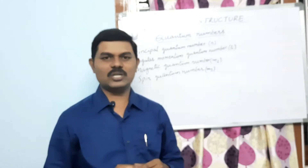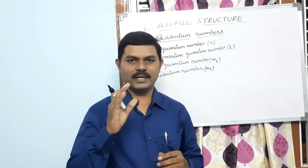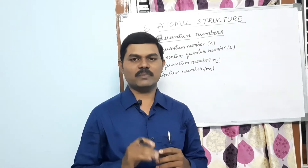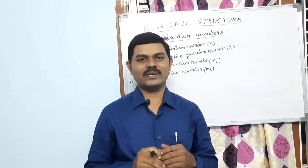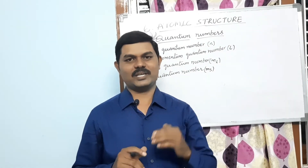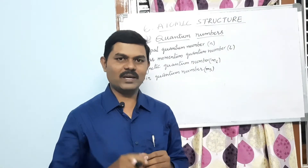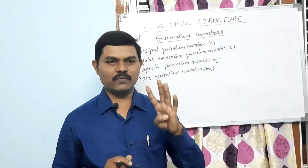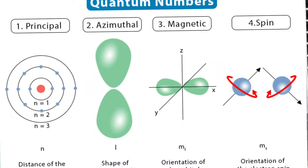Now in the same chapter, structure of atom, we are going to learn about the quantum numbers. To describe the electron or the exact position of the electron, there are a set of numbers. Those numbers are called quantum numbers. Suppose if we want to know one person's address, what do we require? We need their house number, street name, village name, district name, and state. To locate an exact address, all this information is needed.